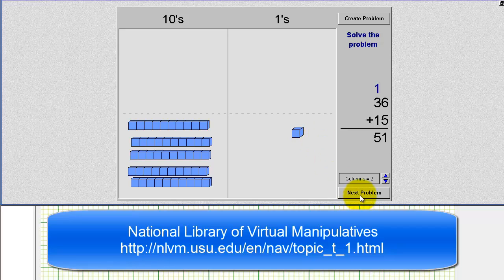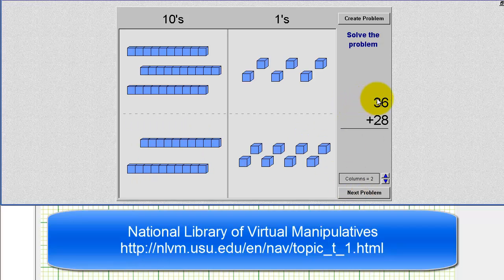Let's take a look at a second example. Here we have thirty-six plus twenty-eight. So for thirty-six, we have three ten blocks and six one blocks. And for twenty-eight, we have two ten blocks and eight one blocks.